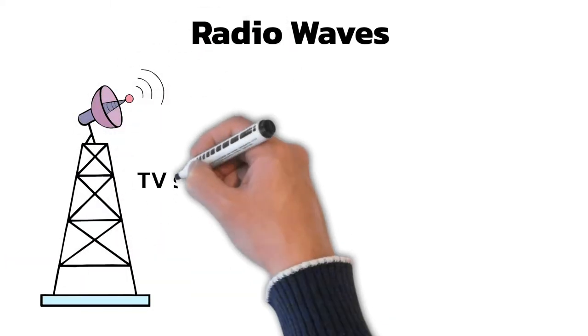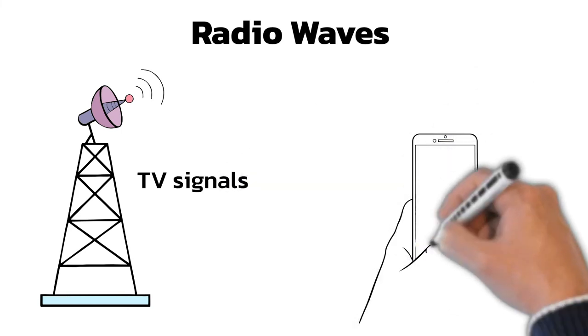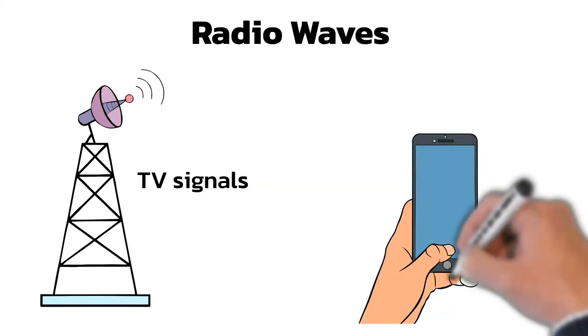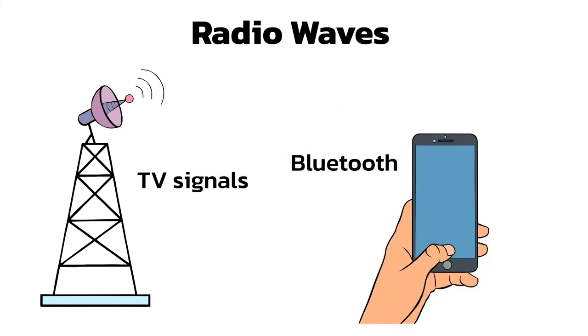Finally, radio waves are perfect for communications, such as TV or mobile phones, because they can be easily and safely transmitted through the air.